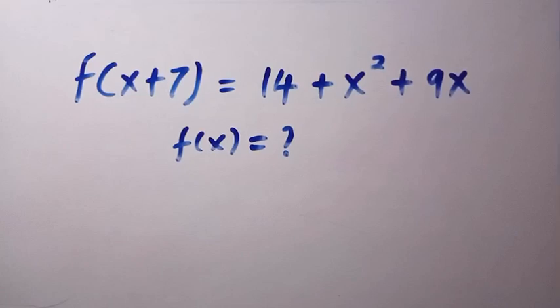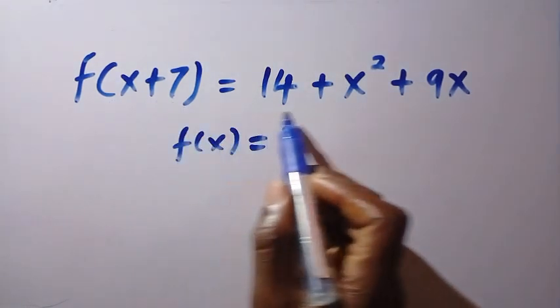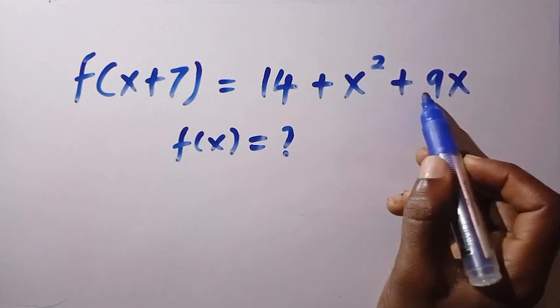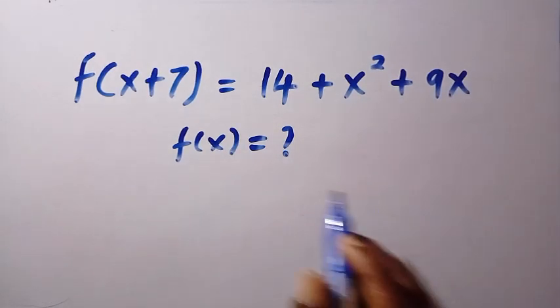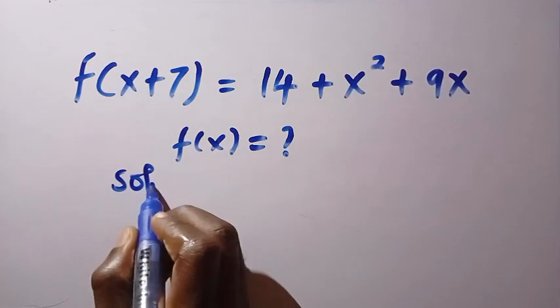Good day viewers, you are welcome. How to solve these nice functional equations given that f of x plus 7 equals 14 plus x squared plus 9x and what is f of x? When we consider solving this,